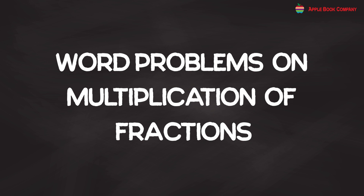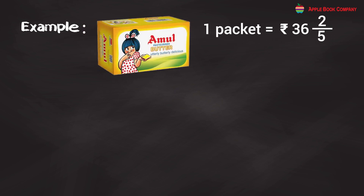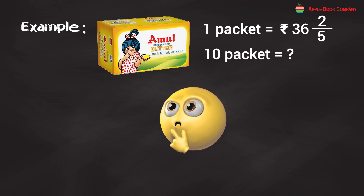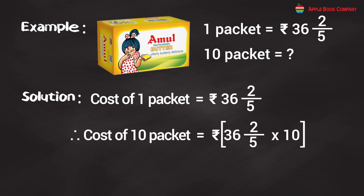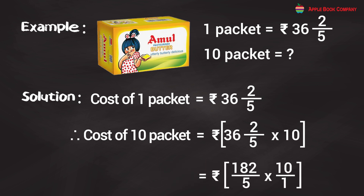Word Problems on Multiplication of Fractions. Example: The cost of 1 packet of Amul butter is Rs. 36 and 2/5. What is the cost of 10 packets? Solution: Cost of 10 packets = 36 and 2/5 × 10 = 182/5 × 10/1. Simplifying, 5 divides into 10 twice, so 182 × 2 = Rs. 364. Hence, the cost of 10 Amul butter packets is Rs. 364.